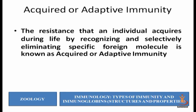Now it is the acquired or adaptive immunity. Acquired or adaptive immunity is what we have adopted during our lifetime. It is not by birth. The resistance that an individual acquires during life by recognizing or selectively eliminating specific foreign molecules is known as acquired or adaptive immunity.